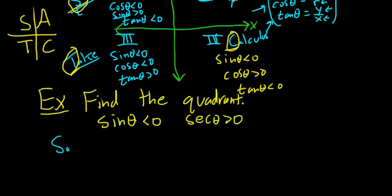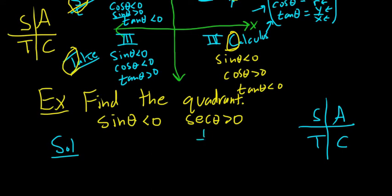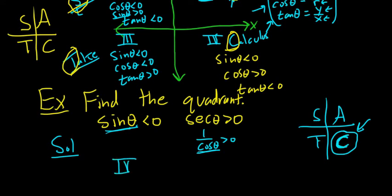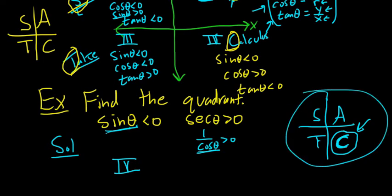Sine is negative and secant is 1 over cosine, so secant greater than 0 means cosine is positive. So we need the quadrant where cosine is positive and sine is negative. Using All Students Take Calculus, only cosine is positive in quadrant 4 — so the answer is quadrant 4. You can do many problems like this; the key is All Students Take Calculus.